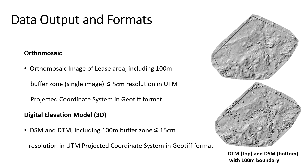First, we will check the updates in OrthoMosaic. The OrthoMosaic image should include a buffer zone of 100m and it should be a single image. The spatial resolution of the image has also been defined — it should be less than or equal to 5cm in UTM projected coordinate system and in GeoTIFF format.